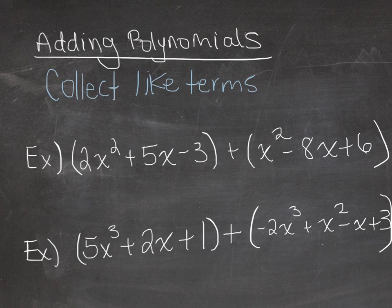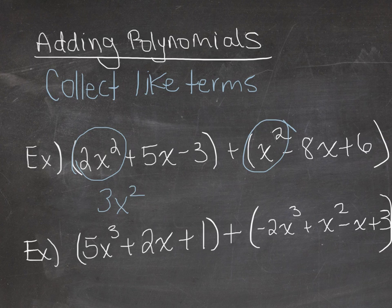If we look at the first example here, we have 2x squared plus 5x minus 3, and then we're adding that to the other trinomial, x squared minus 8x plus 6. So I have to collect my like terms. I see that I have a 2x squared and a 1x squared. So those are like terms. If I bring those together, I end up getting 3x squared.